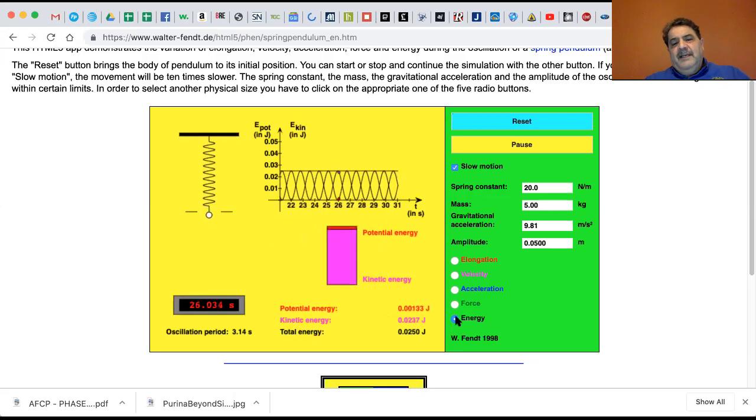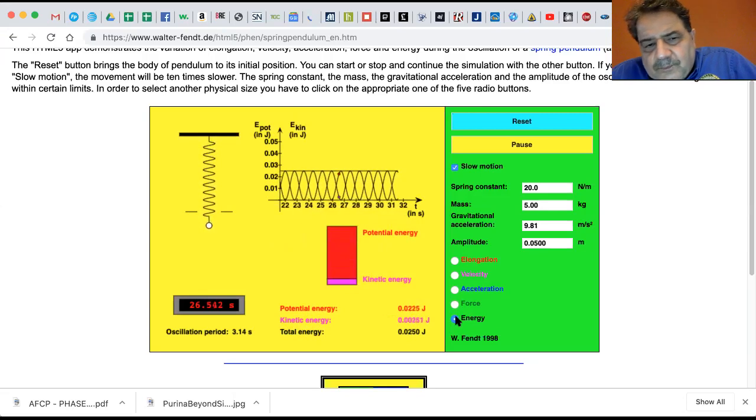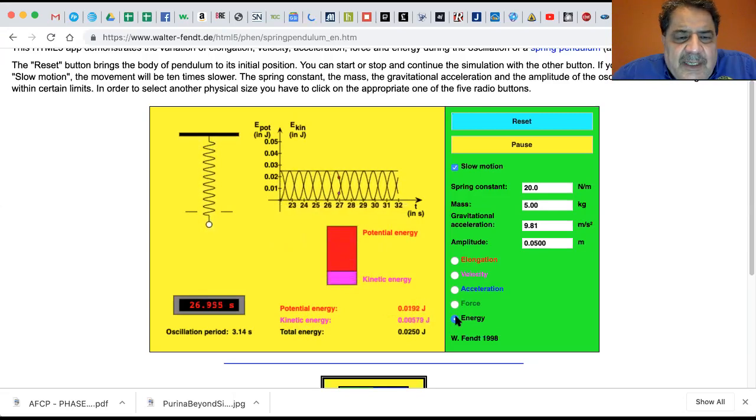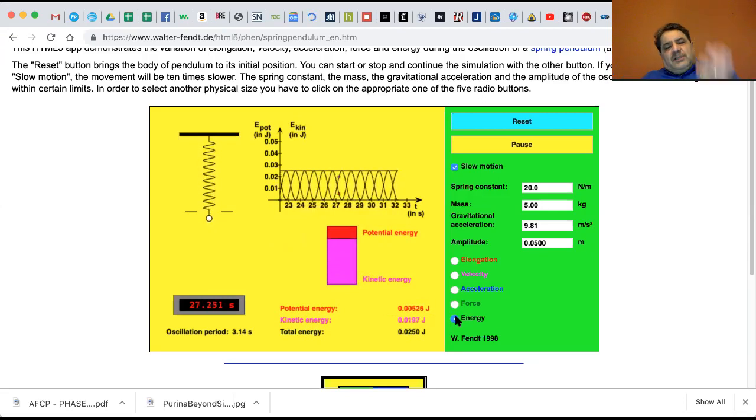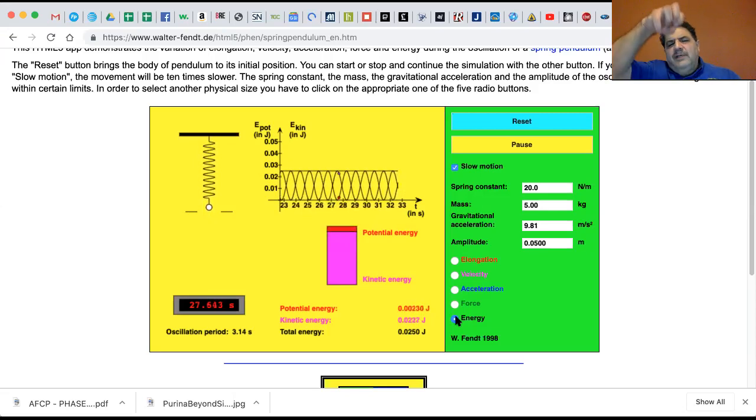Here the potential energy is the red, and kinetic energy is the lavender. And you can see as it goes down, it just went down. It's all spring potential energy. The mass came down, and now it's the spring wanting to pull it up.